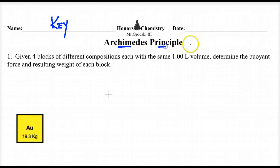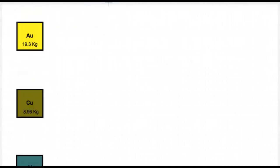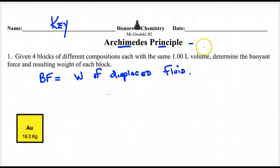Archimedes' Principle states that the buoyant force is equal to the weight of the displaced fluid. So what we're going to do is take these blocks right here, and you're going to submerge them in water with a density of 1, and they all have the same 1 liter volume. And we want to find the new weight, the buoyant force, and then the new weight.